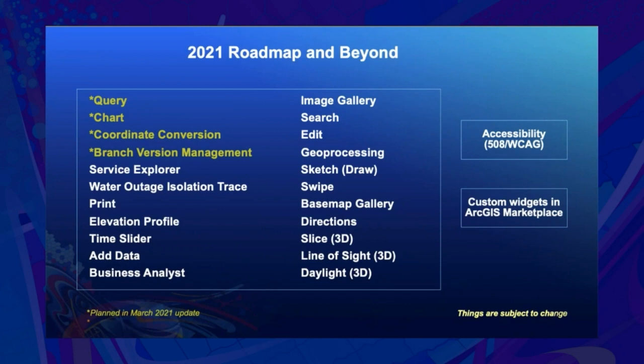The priority list for 2021 and beyond includes core widgets like Print, Add Data, Search, and Edit. Service Explorer and Water Outage Isolation Trace widgets are for utility networks. We also plan to support accessibility and listing custom widgets in the marketplace. Keep in mind, things are subject to change.